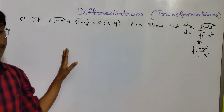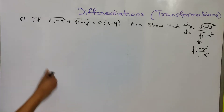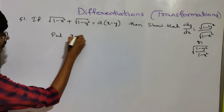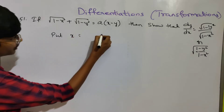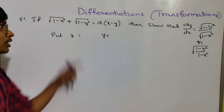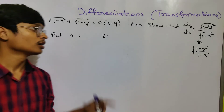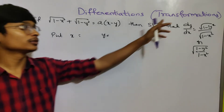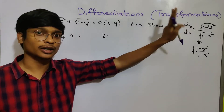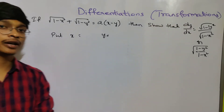We will transform this problem using the transformation method. Put x equals to something and y equals to something. If we have any problem with this, we will do the transformation method. The transformation method uses trigonometric functions.